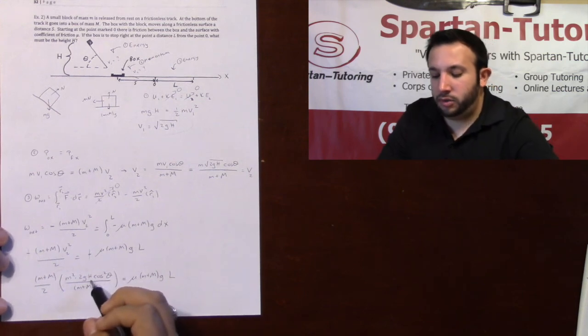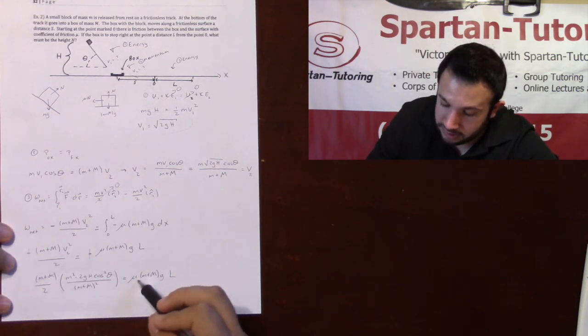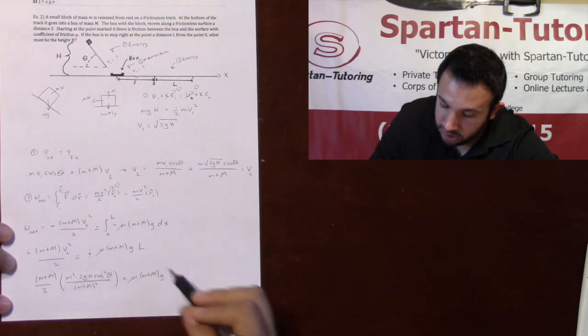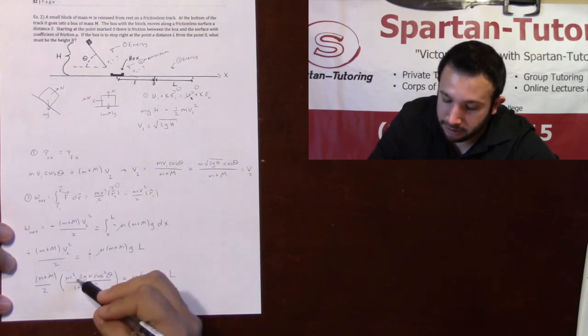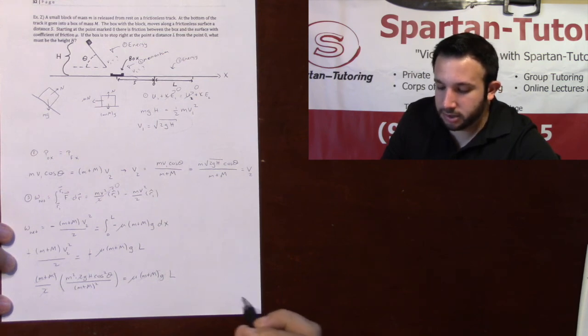And now we just got to do algebra to solve for that H. Let's see. I know this will end up canceling here. This G will cancel with that G. This 2 will cancel with that 2. I think that's all that can cancel.